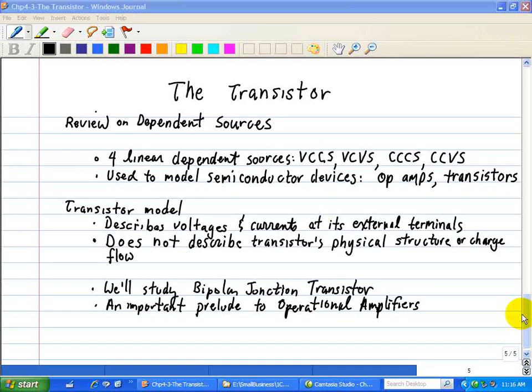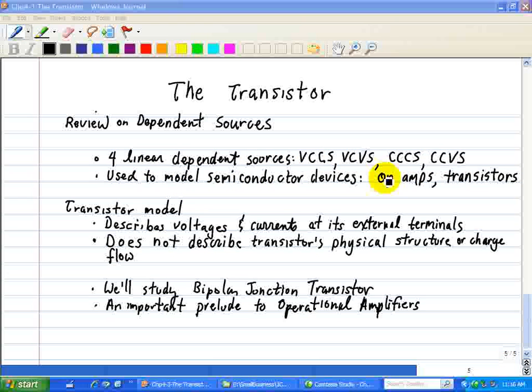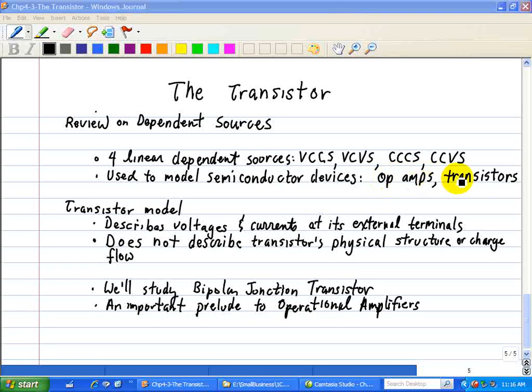In earlier videos, we defined four linear dependent sources: voltage-controlled current source, voltage-controlled voltage source, current-controlled current source, and current-controlled voltage source. We use these dependent sources to model semiconductor devices such as operational amplifiers, or op-amps, and transistors.